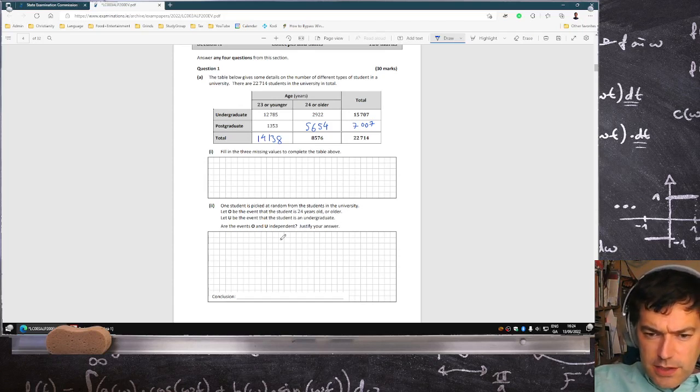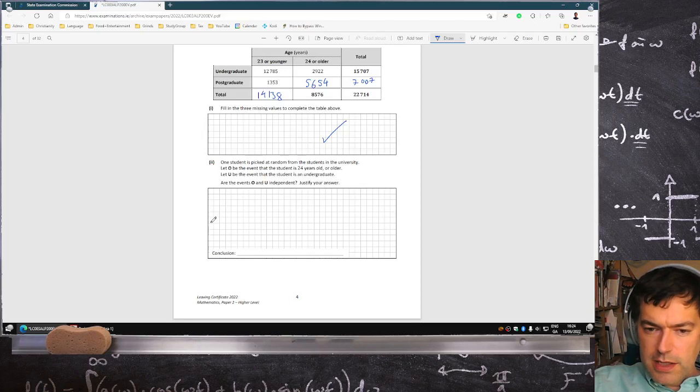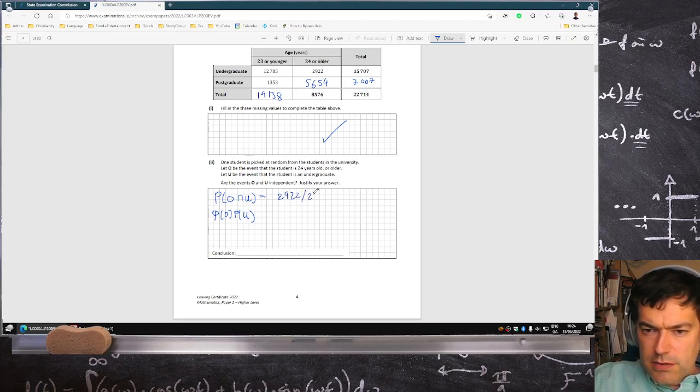One student has been picked at random from the students in the university. Let O be the event that the student is 25 years old or older. Let U be the event that the student is an undergraduate. Are the events O and U independent? Well, we can check for independence by calculating the probability of O and U, and comparing it to the probability of O times the probability of U. So O is 24 years or older.